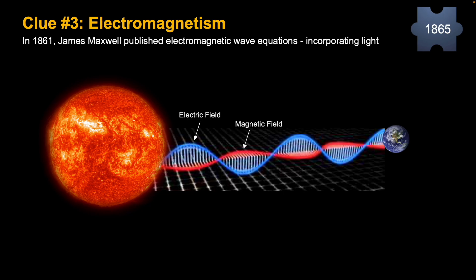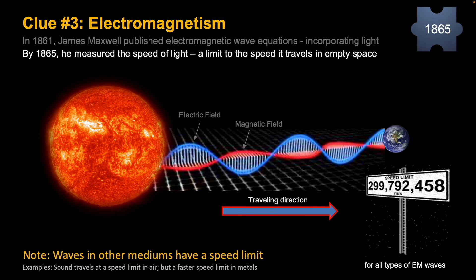But the other thing that Maxwell did, 1865, is measure the speed of light. So a limit to how fast light can travel in empty space.